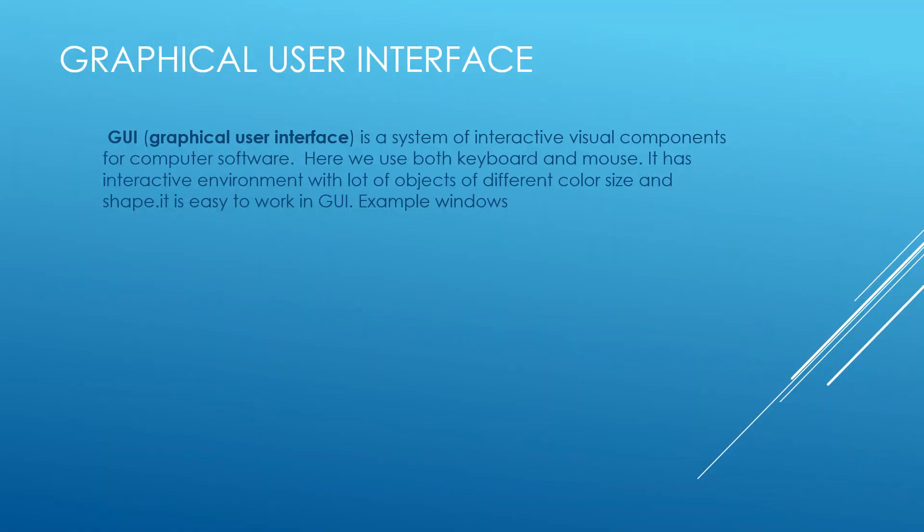Nowadays the graphical user interface is very popular. It is a system wherein we have an interactive visual component for computer software. Here we can use both our keyboard and mouse, and it is a very interactive and colorful environment. We have objects of different color, shape, and size, and it's very easy to work in GUI. Some examples are Windows 7, Linux, and Windows 10.